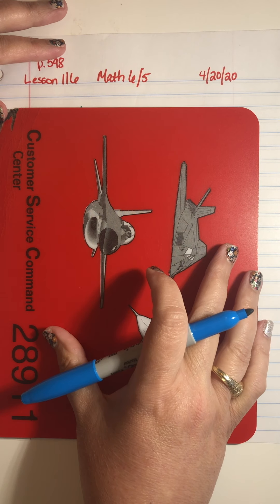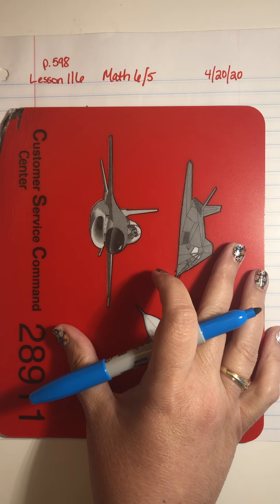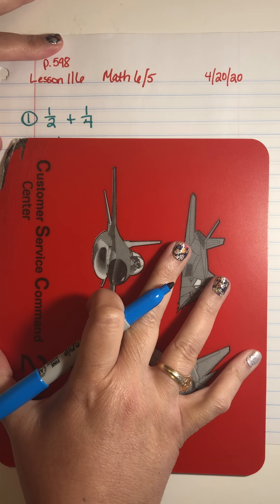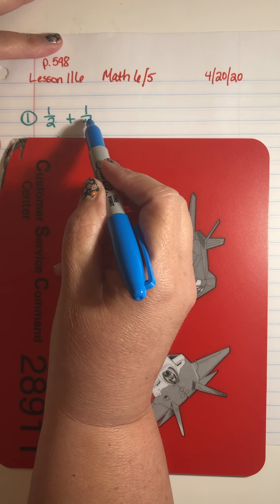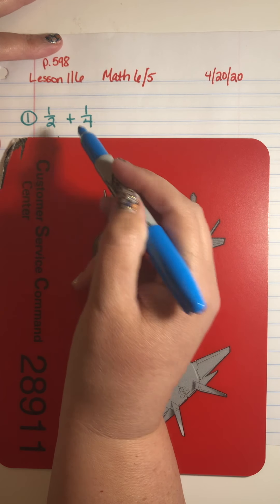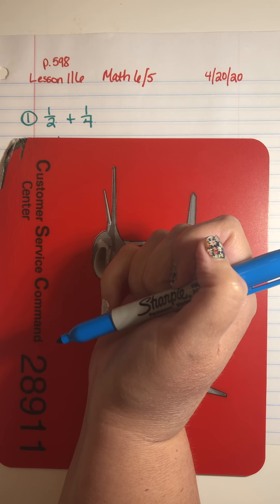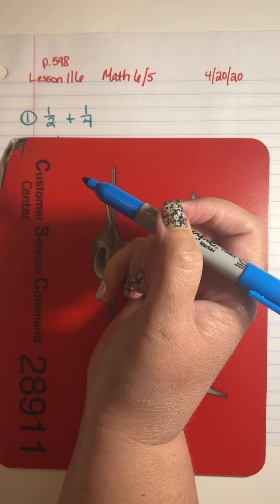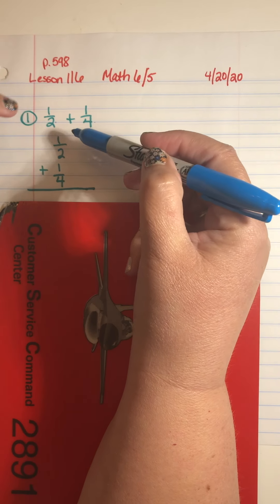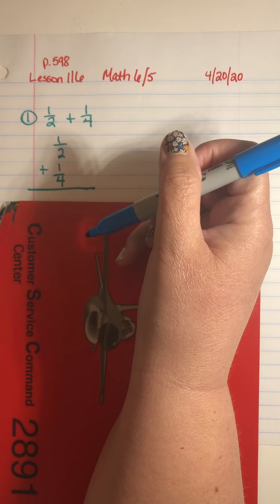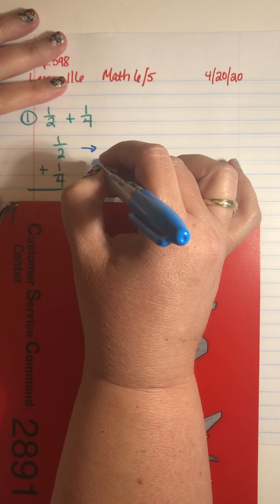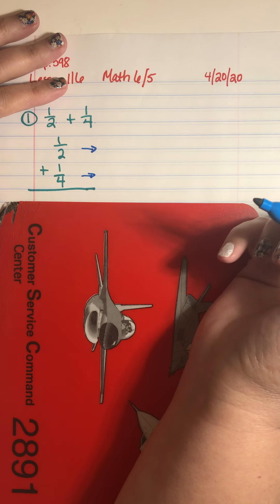Remember, in the past our fractions have had the same denominator, but if I go to my first example and look at it, my denominators are two and four. I can't add fractions that have a different denominator, so the first thing I have to do before I can add them is I have to put them into a common denominator. I like to write my problems vertically because I think it's easier to see that way.